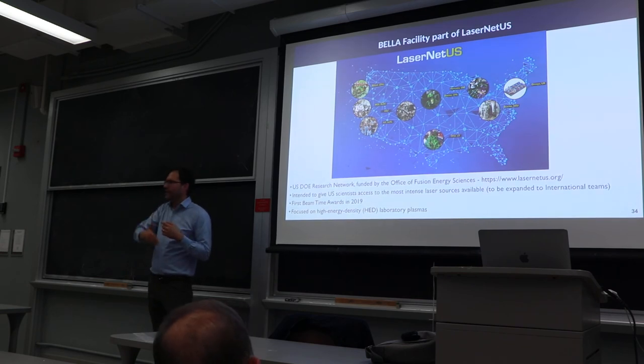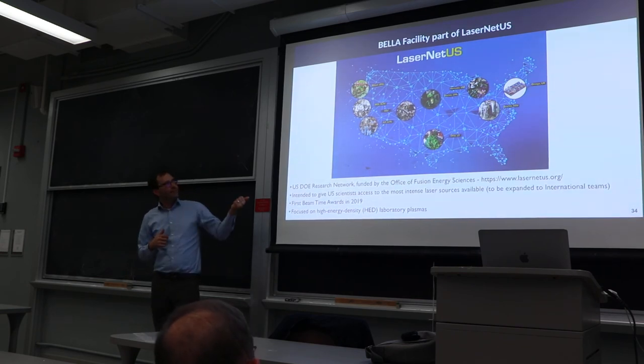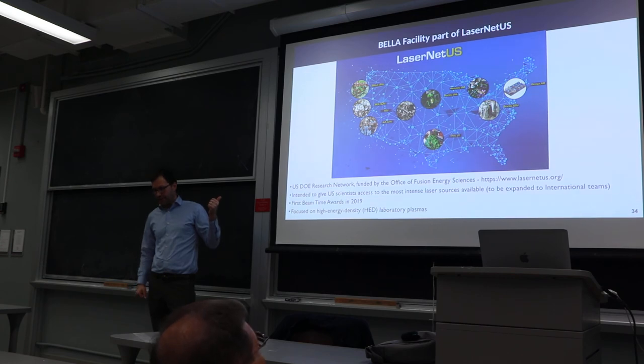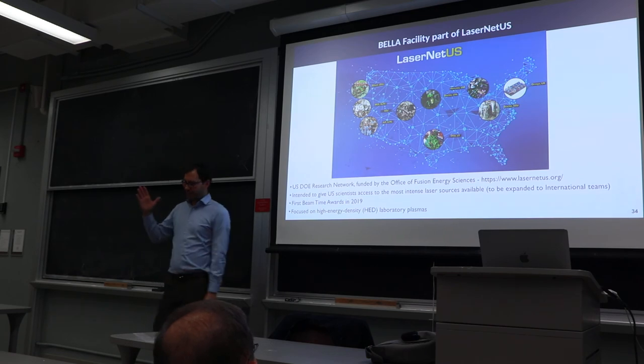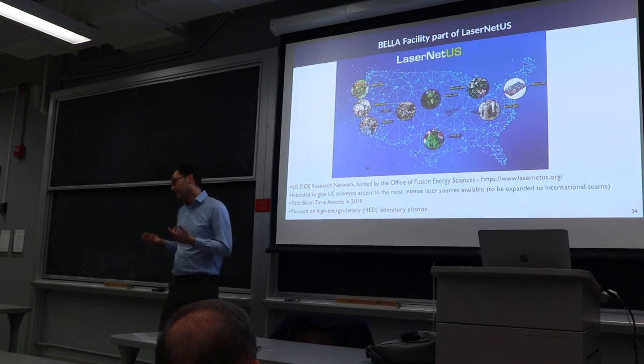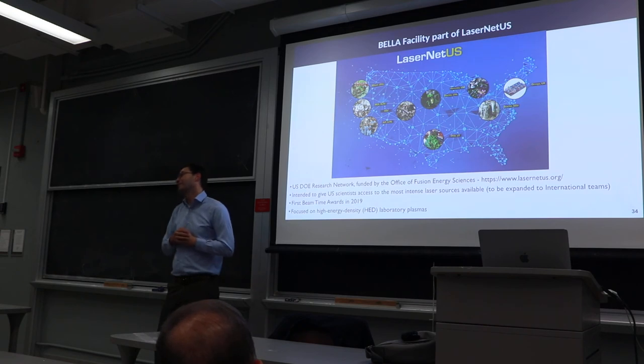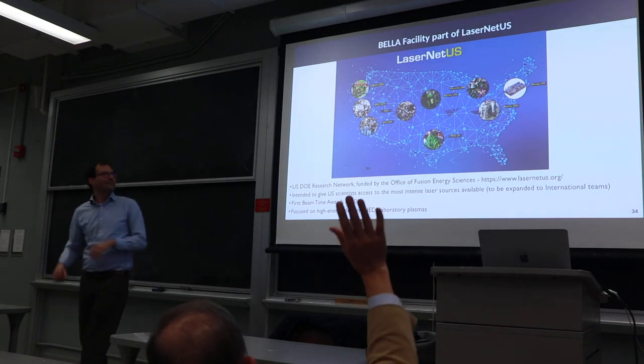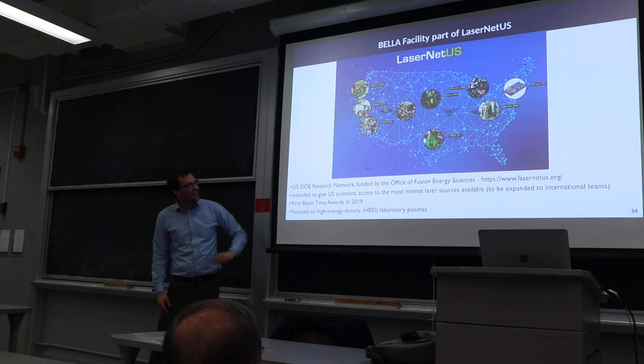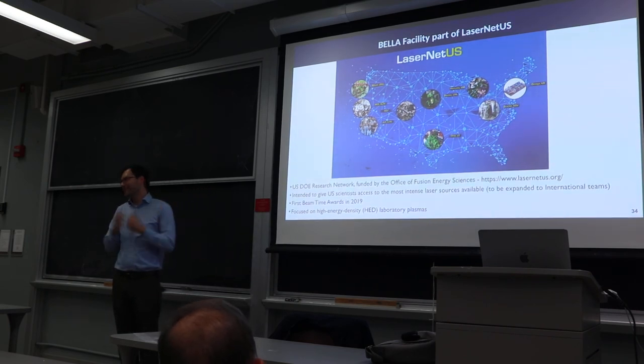The other experiment was on a liquid film target. These accelerators operate at 1 to 10 hertz. If you're using a fixed solid target, you can imagine some wheel or tape. What would be even better is a renewable liquid target. This was a plasma mirror concept based on a liquid film, so we were testing how well that worked for reflectivity. Those were the two experiments from last year. In 2020 we'll get more depending on what people propose.